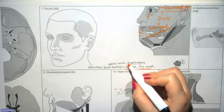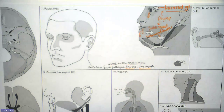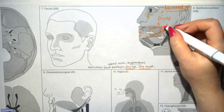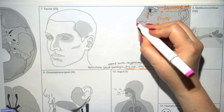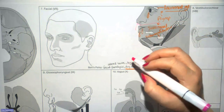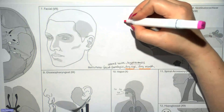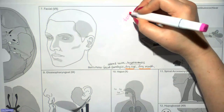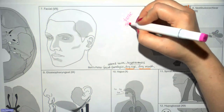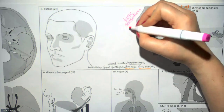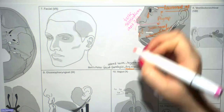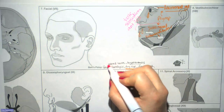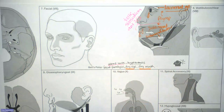What about the altered taste? The trigeminal supplies touch sensation to the anterior two thirds of the tongue, while taste sensation to the anterior two thirds is innervated by the facial nerve. So this explains the altered taste seen in Bell's palsy.